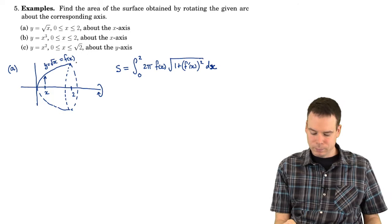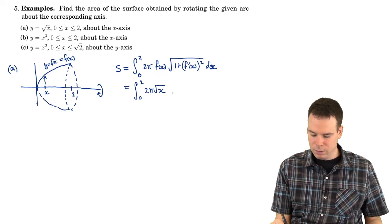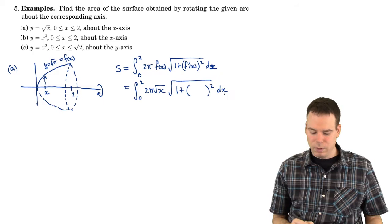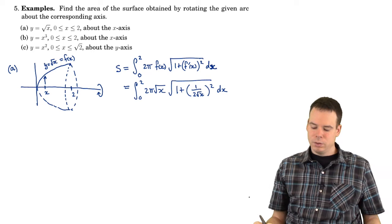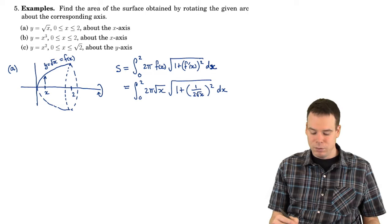What is f(x) in this case? The function is the square root function, square root of x. So we can go ahead and plug everything in: that's 2π times the square root of x, times the square root of 1 plus — that's the derivative of square root of x, all squared — so that's 1 over 2 root of x, squared. So that's the integral we need to compute to get our surface area.